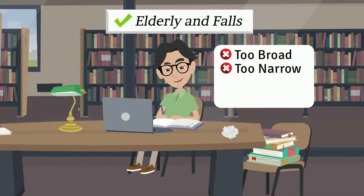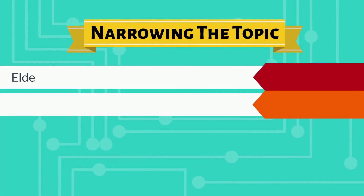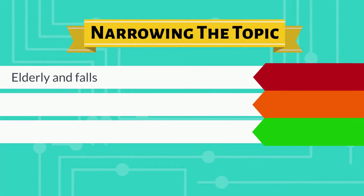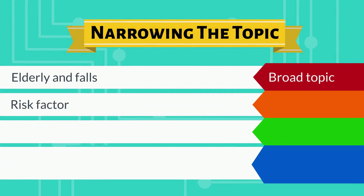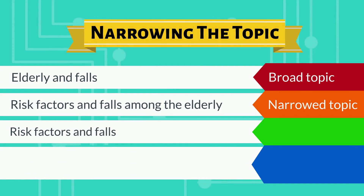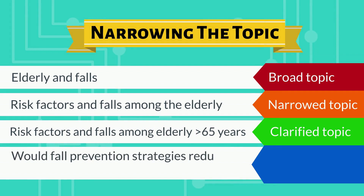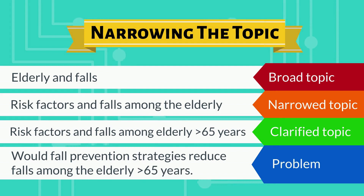Narrowing the topic — elderly and falls is the broad topic. Risk factors and falls among the elderly is the narrowed topic. Risk factors and falls among elderly greater than 65 years is the clarified topic. Would fall prevention strategies reduce falls among the elderly greater than 65 years? That becomes the research problem.